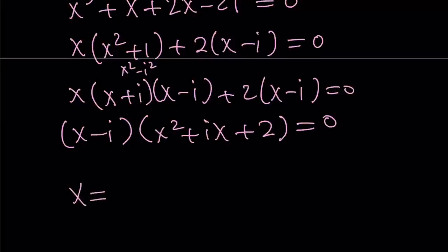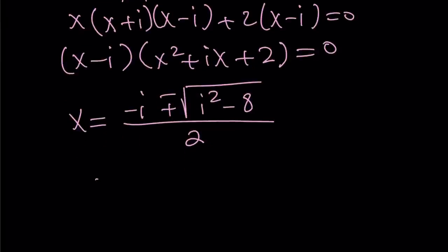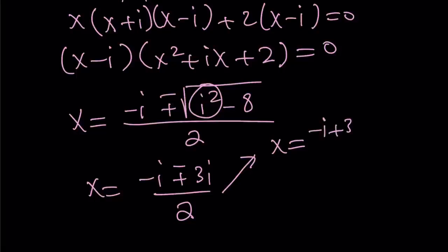So here we get a common factor, which is really nice, and we can take out (x-i). From there we get x² + ix + 2 = 0. So the rest is basically solving this quadratic equation. We know that x equals i is one of the solutions. Let's go ahead and find the other ones using the quadratic formula.